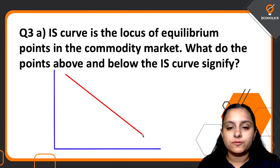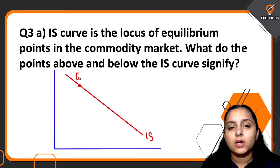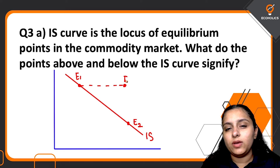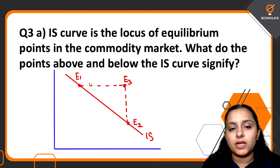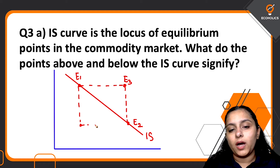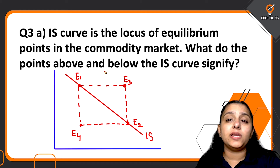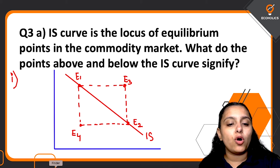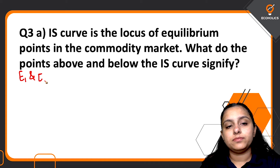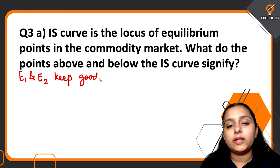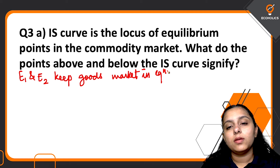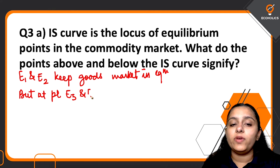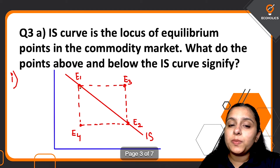So this is your IS curve. Now we have to talk about the points above and below it. Points E1 and E2 are on the IS curve — these combinations of rate of interest and income keep the goods market or commodity market in equilibrium. Point E3 is above the IS curve and E4 is below it — both represent disequilibrium of the goods market.